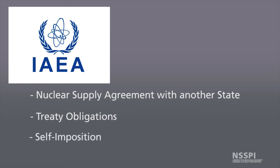Also, self-imposition: a state could want to prove that it does not have a clandestine nuclear weapons program or is diverting materials for the purpose of nuclear weapons. So they invite the IAEA to safeguard a facility and conclude an agreement based on that concept.